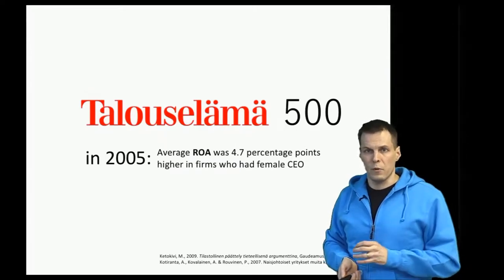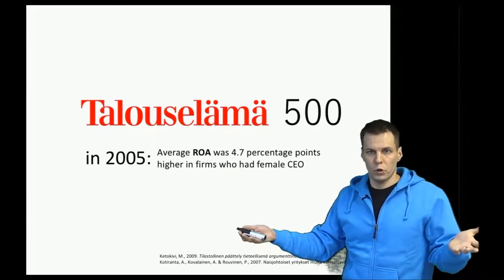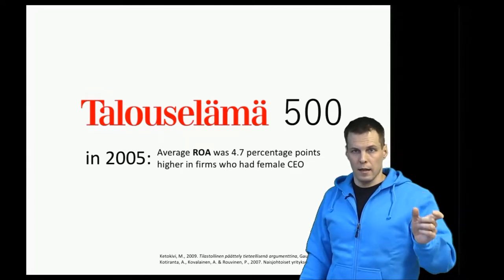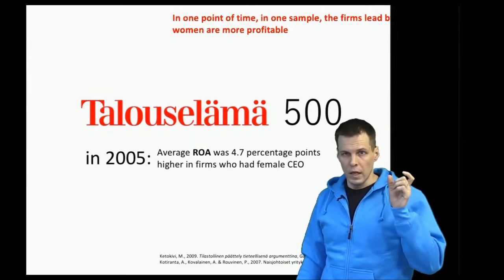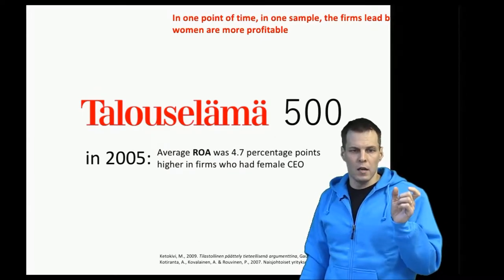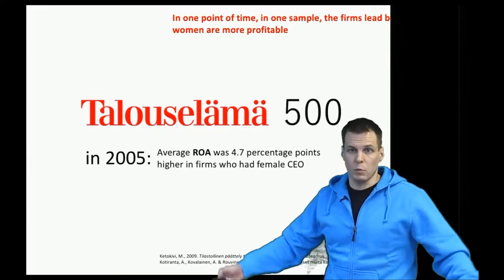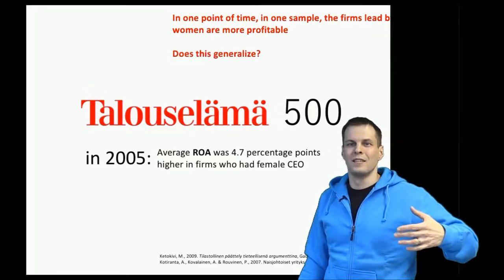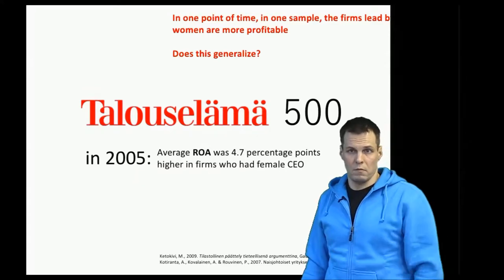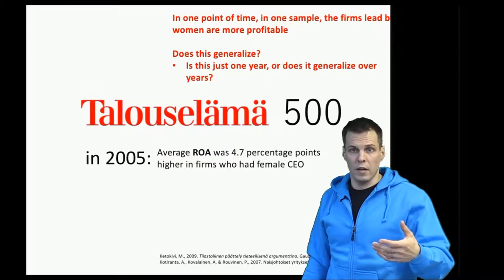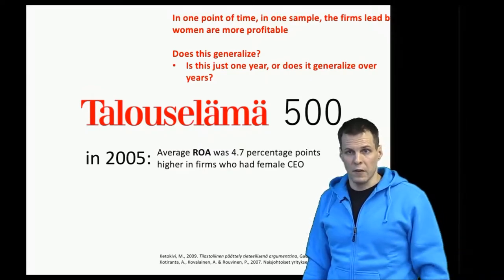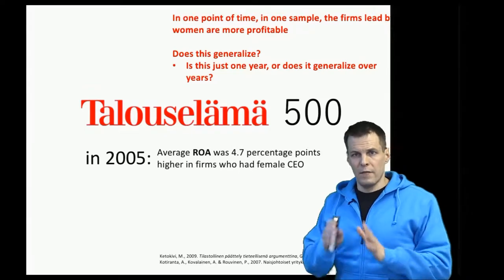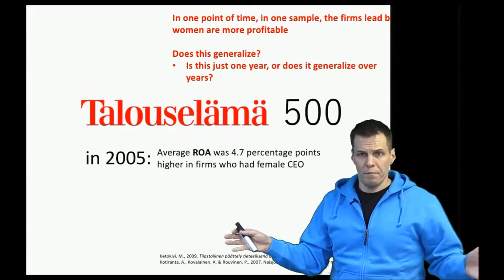4.7 percentage points is a pretty big difference — but so what? What the data tell us directly is that at one point in time, in one sample, the firms led by women are more profitable. The question is: can we generalize? Can we say something beyond that particular sample? Can we say this generalizes to other years, or is it just one year? If it's just one year and women-led companies happen to be more profitable but it doesn't generalize, then it's not a big deal.